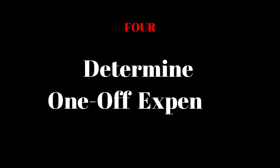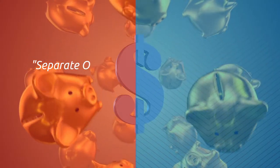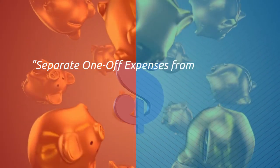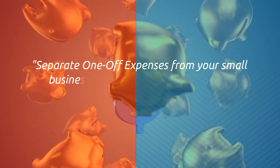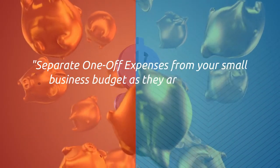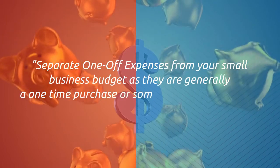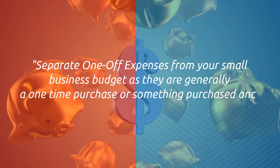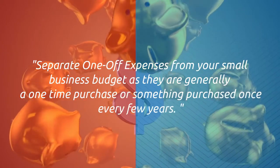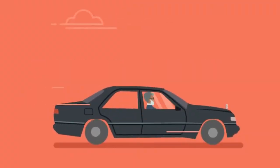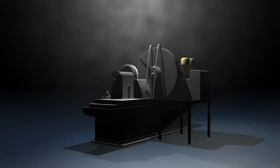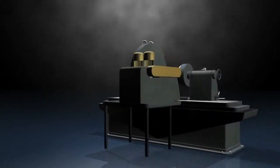Step four: determine one-off expenses. Separate your one-off expenses on your small business budget, as they are generally a one-time purchase or something purchased once every few years — things like new equipment and the likes.